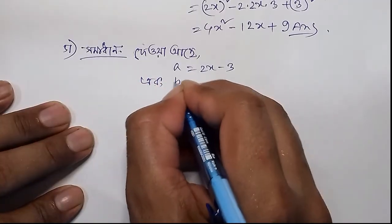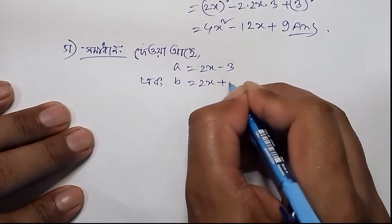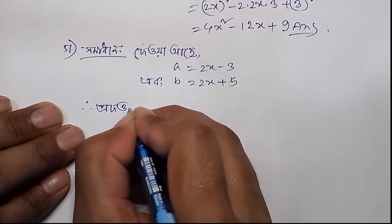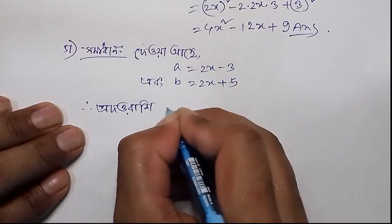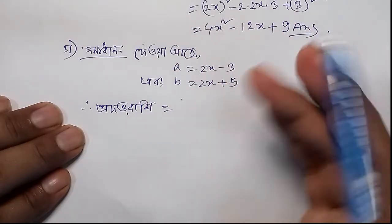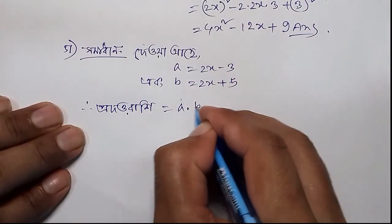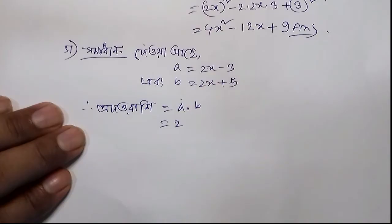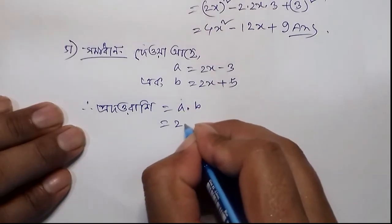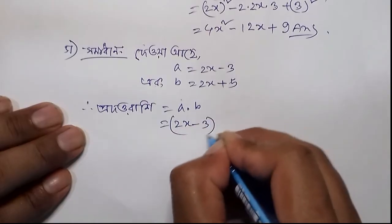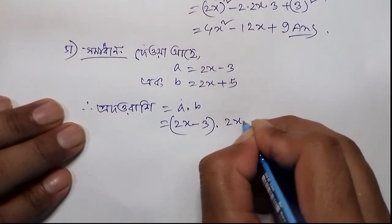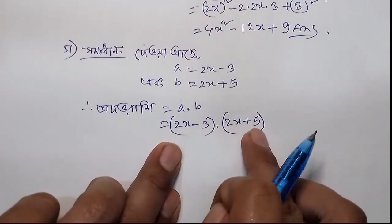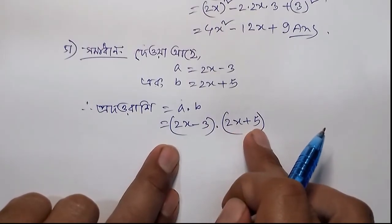Even b is equal to 2x plus 5. Now we will find the product of a and b. So here we have (2x minus 3) and (2x plus 5). We cannot directly multiply these so we need to apply the formula.